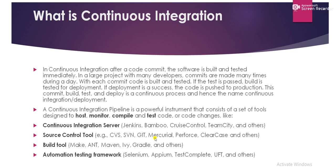When the job is triggered and the code is committed, if the build fails, Jenkins will trigger an email to the respective team to fix the issue. If the build succeeds, post-build actions happen and the code is deployed to the respective system. This is called continuous integration, and it makes code delivery faster.